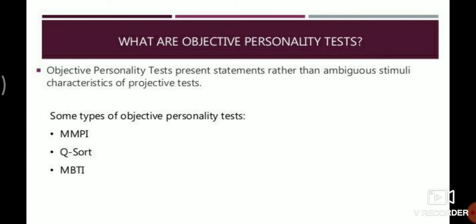The next method is the objective personality test. One way of assessing personality is to ask individuals to respond to a self-report inventory. These inventories are objective measures of relatively stable and enduring characteristics of a person.